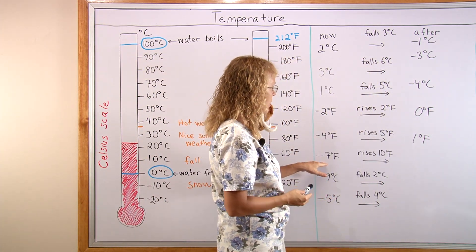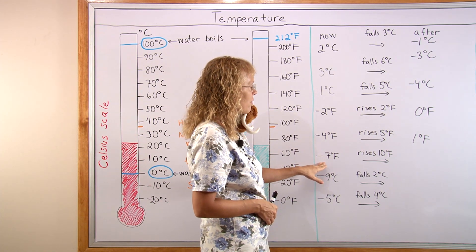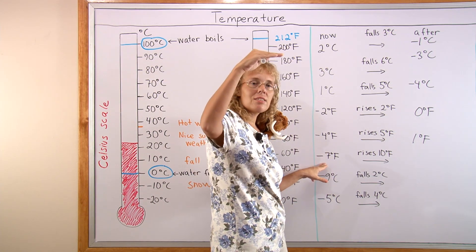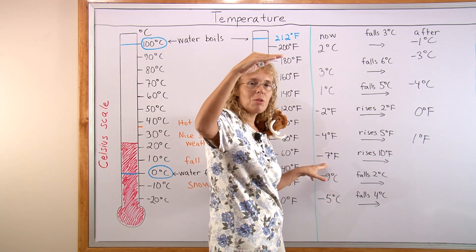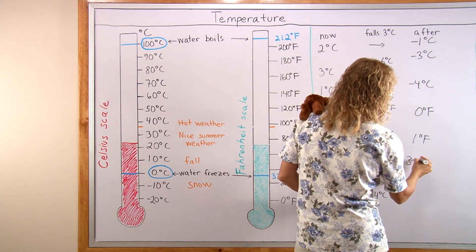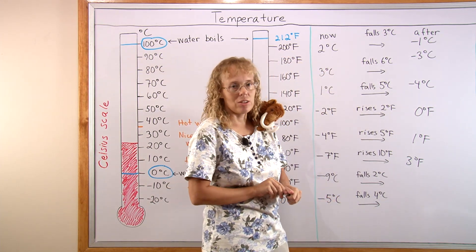Or you are at negative 7 degrees. You have minus 7 Fahrenheit and the temperature rises 10 degrees. Minus 7 and then 7 more will bring you up to 0 and then 3 more above that. So you have 3 degrees Fahrenheit. These are integer additions and subtractions in disguise.